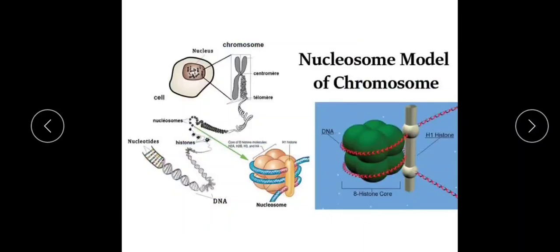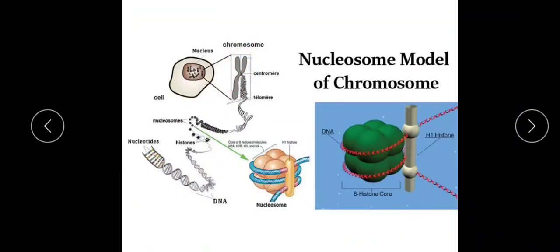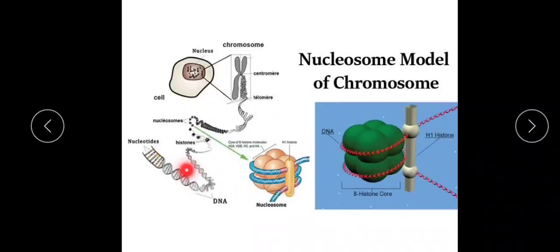The DNA, which is our genetic material, is encased in the nucleus and packaged as chromosomes. We can see the chromosome structure only when the cell is preparing for division or going through cell division. When the cell is in the interphase stage, we get only the chromatin-like appearance. The DNA has to undergo several folds of packaging to achieve this organization.